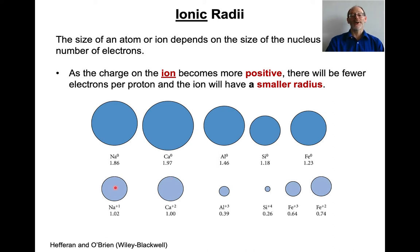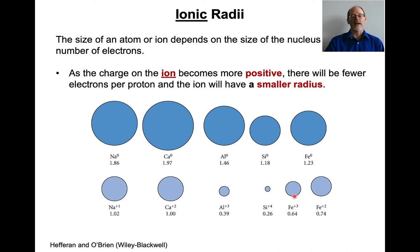This becomes really pronounced as you move right across a row. Aluminum has a rather large atomic radius but a tiny ionic radius. Silicon becomes plus four — that's a very small radius. Iron's ionic radius depends on whether it's plus two (ferrous) or plus three (ferric). The ferric iron has fewer electrons relative to protons, so it has a smaller ionic radius.